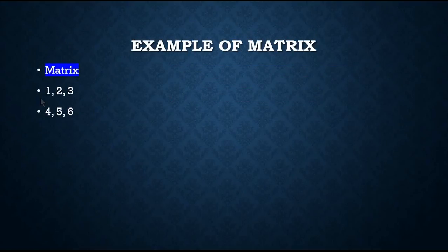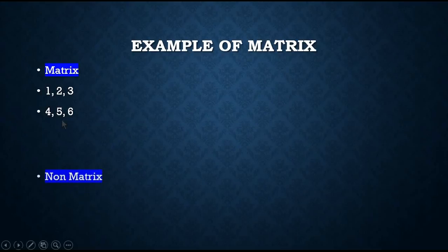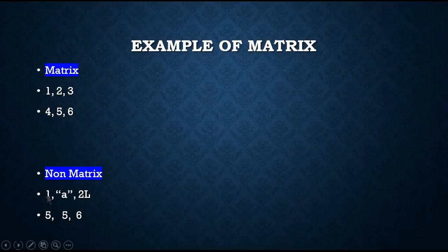Matrix. The example of a matrix contains only a single type of data and has two dimensions — rows and columns — so this as a whole is considered a matrix. This is an example of non-matrix data. Why is this a non-matrix when it has two dimensions — rows as well as columns? Because by definition a matrix can only hold a single type of data, and this object has multiple types of data: numeric, character, and integer data. So it cannot be considered a matrix in R.